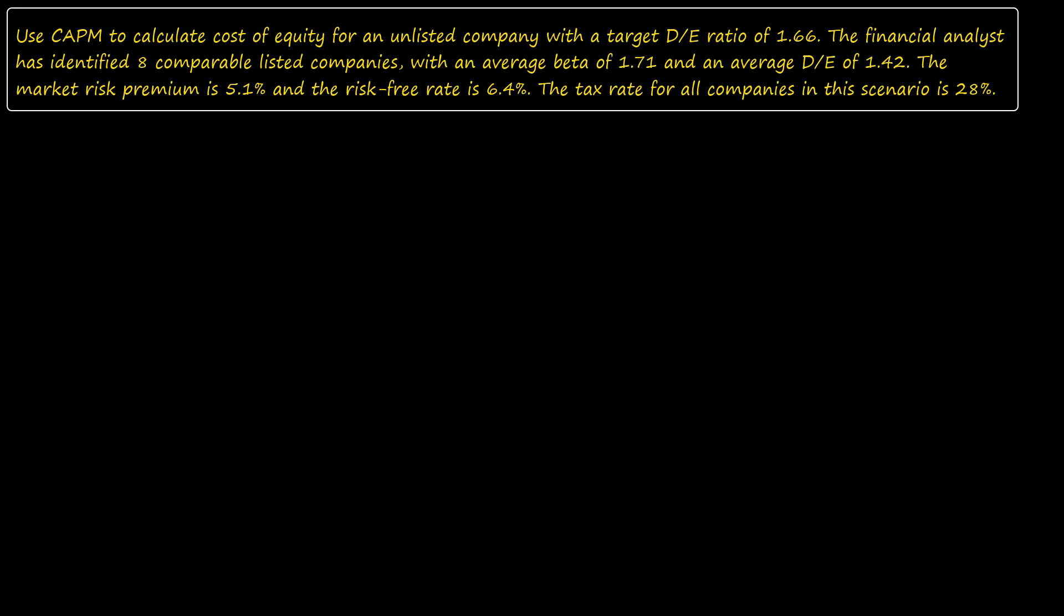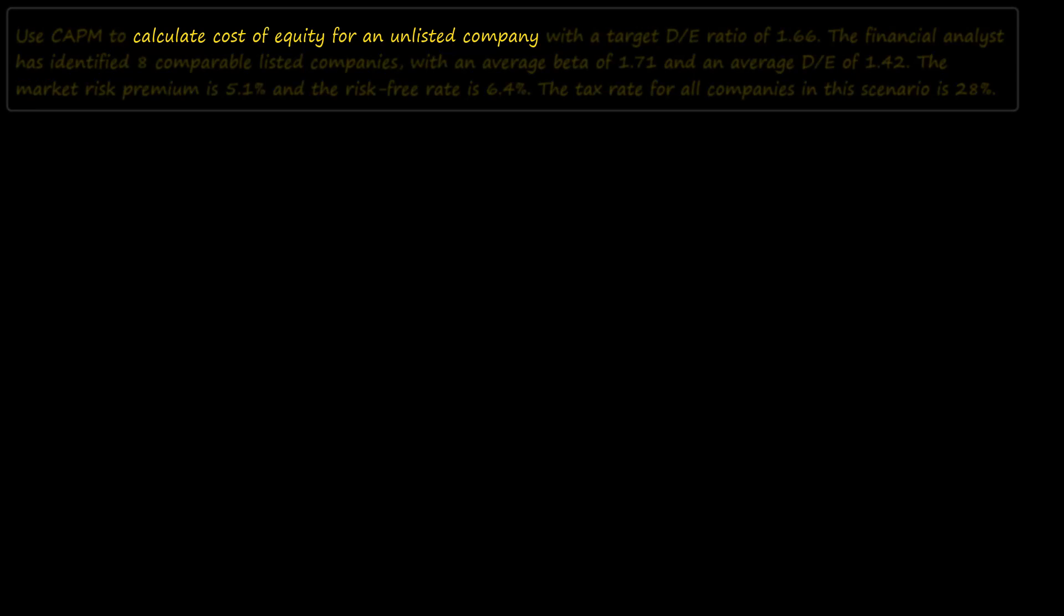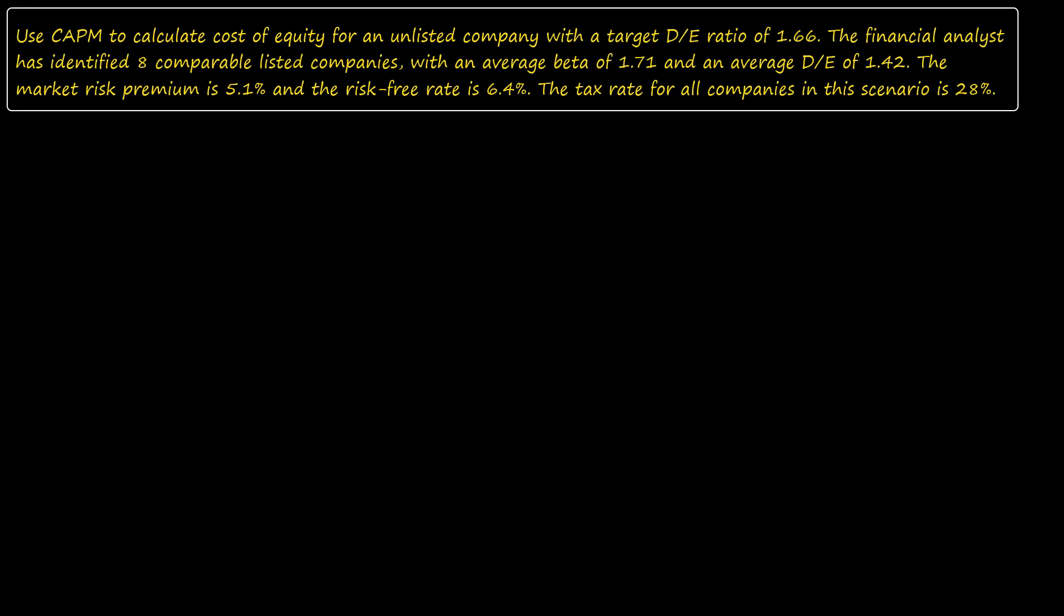In this example, we are asked to calculate the cost of equity for an unlisted company. Because this company is unlisted, we do not know its beta. Therefore, we can't use CAPM without some kind of workaround.